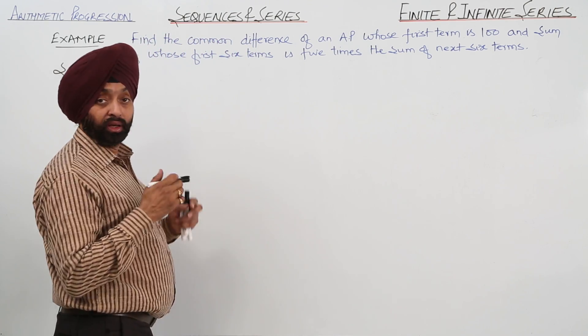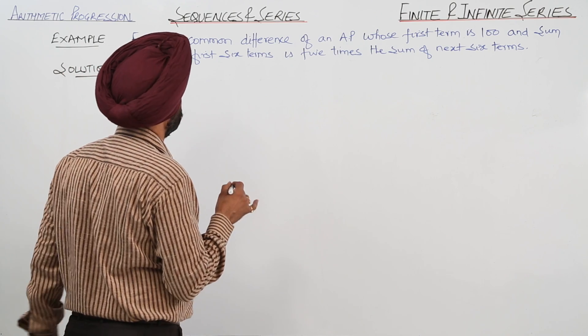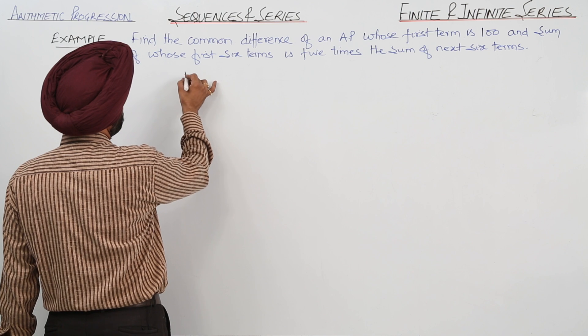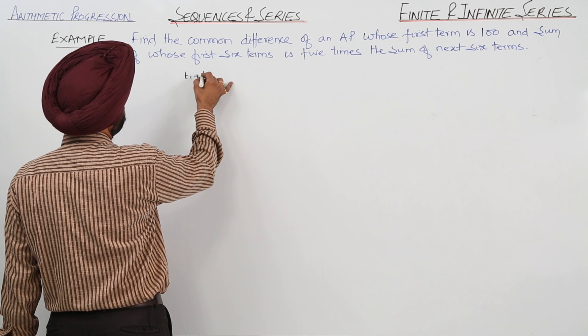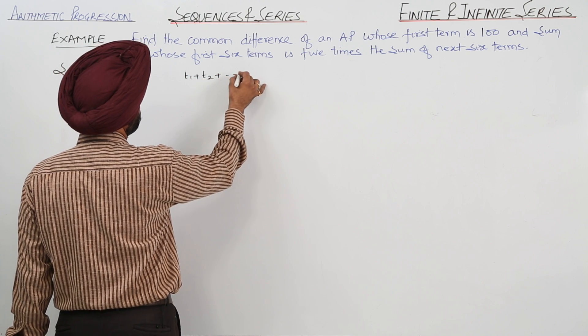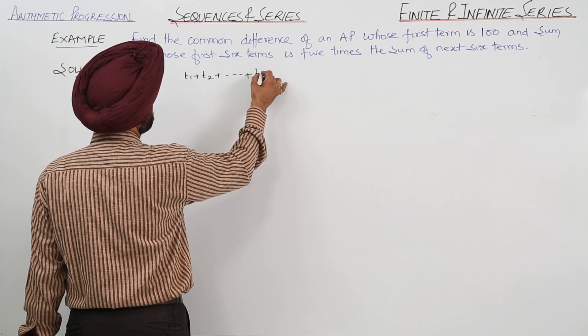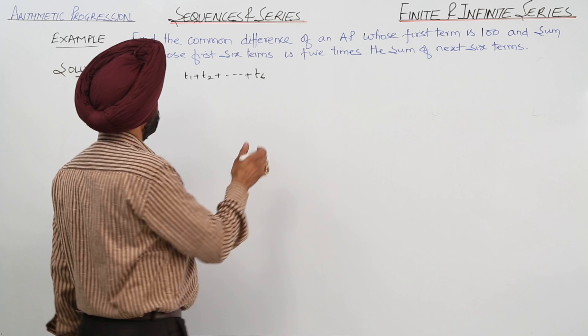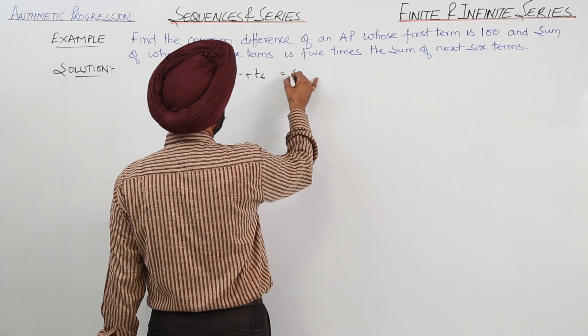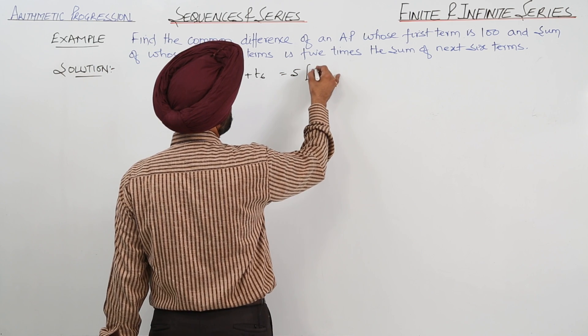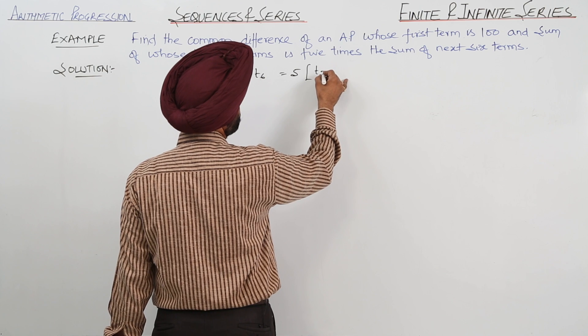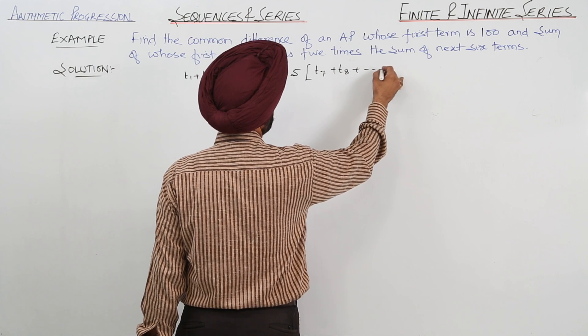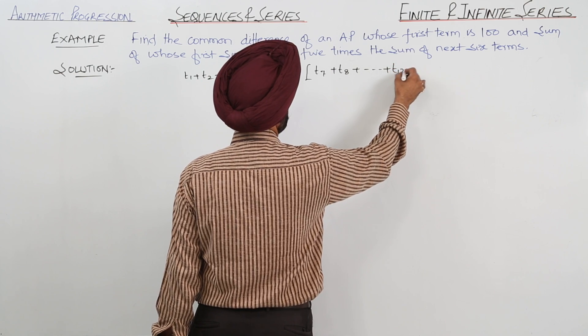Now the last line is very important, read it carefully. What they have given and what we have to find? We have to find T1 plus T2 plus T6, sum of the first 6 terms, is equal to 5 times sum of the next 6 terms, that is T7 plus T8 plus T12.